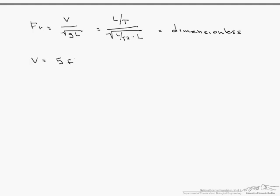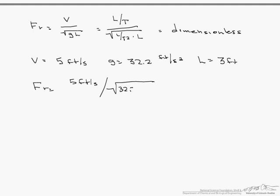Let's say we have a velocity of 5 ft/s, gravity is 32.2 ft/s², and length is 3 feet. The Froude number is 5 ft/s divided by the square root of 32.2 ft/s² times 3 feet, which equals 0.509.